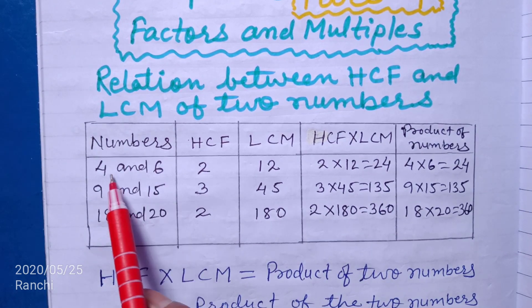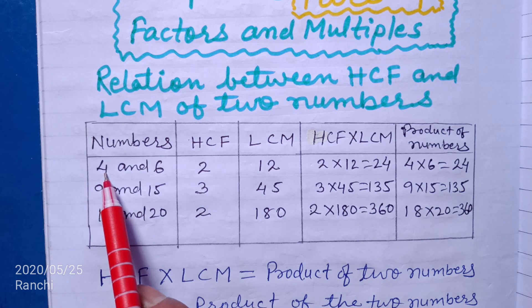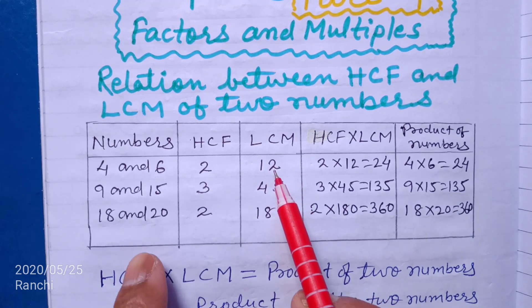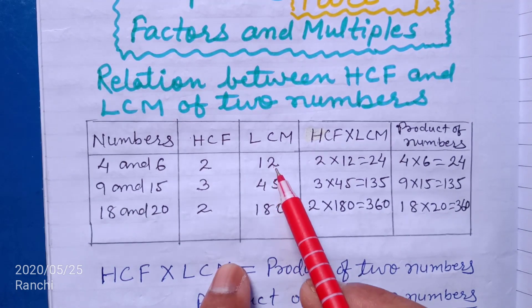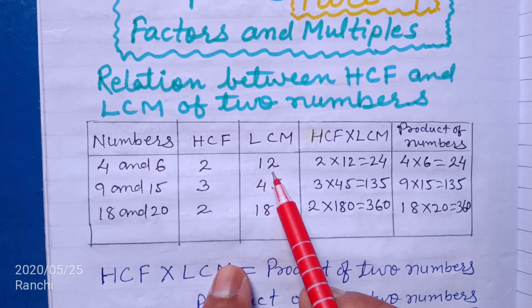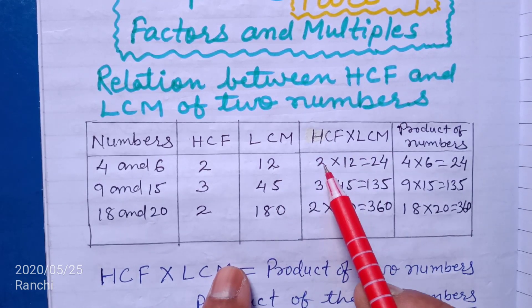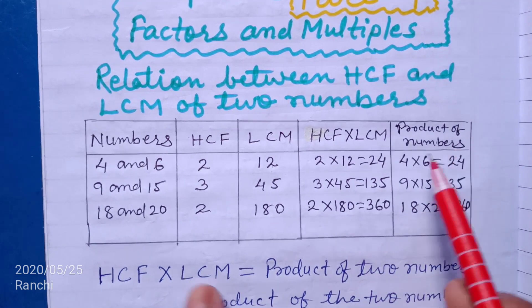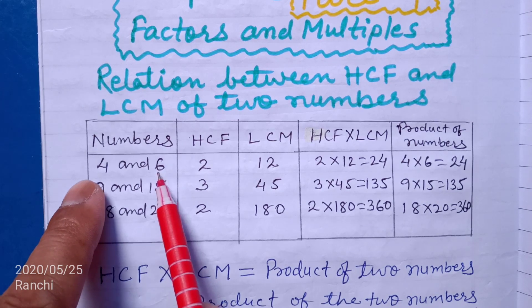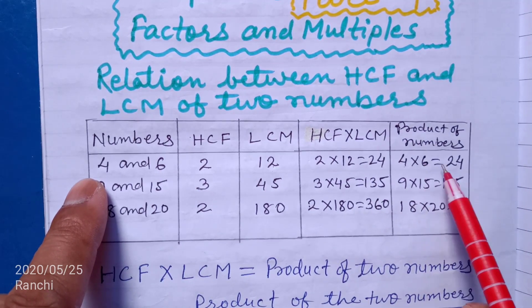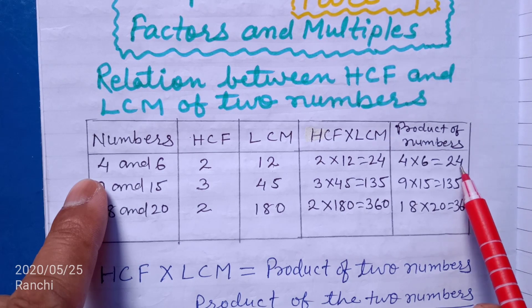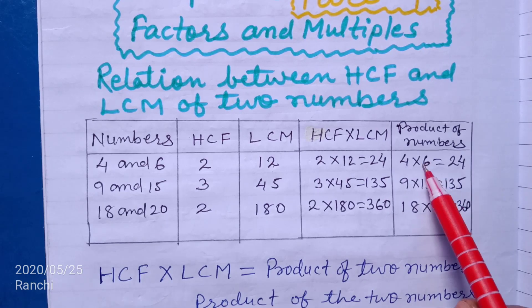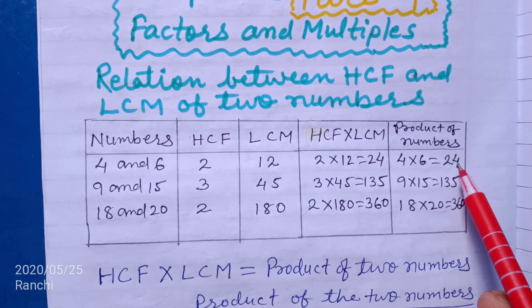Numbers are 4 and 6. The HCF of 4 and 6 is 2, and LCM of 4 and 6 is 12. Now, HCF into LCM means the product of HCF and LCM: 2 into 12 equal to 24. And the product of numbers: 4 into 6 equal to 24. So HCF into LCM equals 24, and product of numbers equals 24.